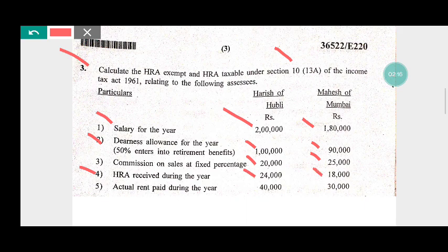Actual rent paid during the year: Harish is Rs 40,000 and Mahesh is Rs 30,000. We need to calculate the HRA exempted and HRA taxable. Under Section 10 sub-section 13A, when we are calculating the HRA exempted, we need to consider the least of the following three amounts.